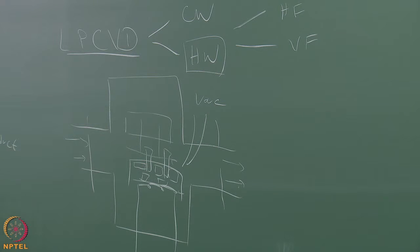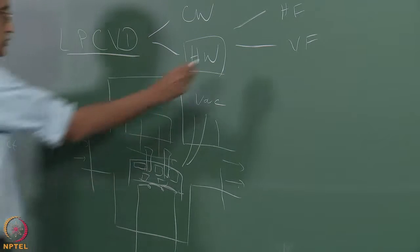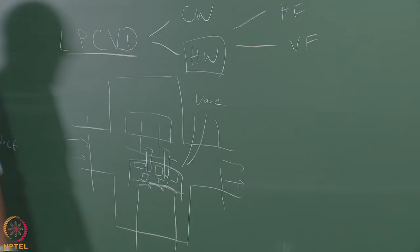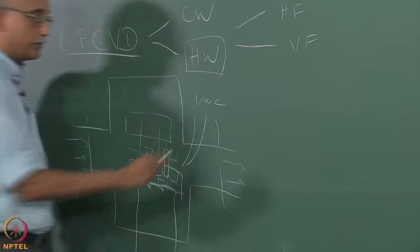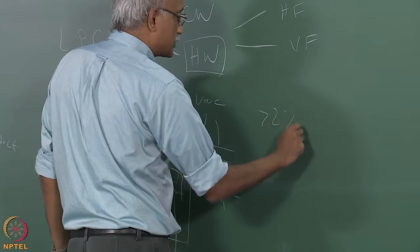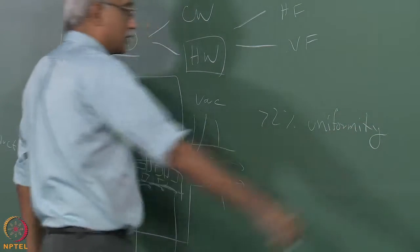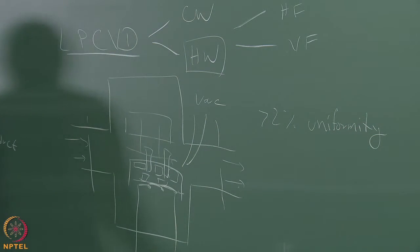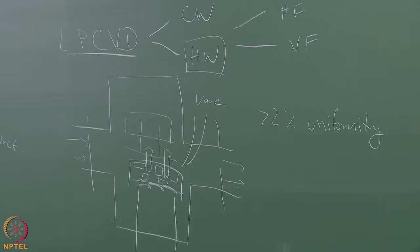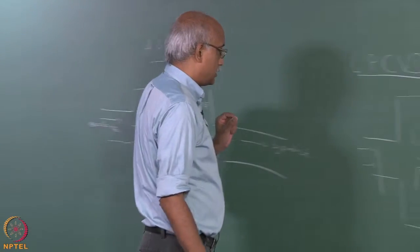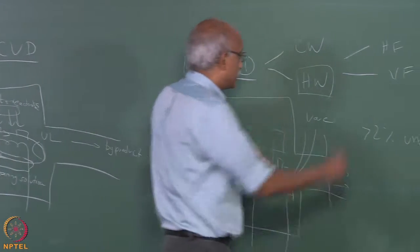With a vertical flow, hot wall LPCVD configuration, it is possible to achieve better than 2 percent uniformity in the CVD film. That is, if you measure the CVD film across its length and look at the variation in thickness, it can be controlled to be no more than 2 percent, which is very good in a CVD reactor. So this is the preferred configuration — wafers mounted vertically in the cassette, walls kept at about the same temperature as the substrate, and pressure taken down to sub-atmospheric levels.